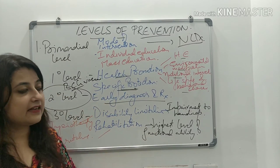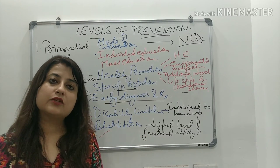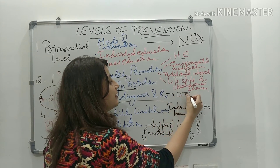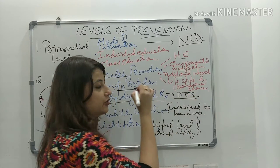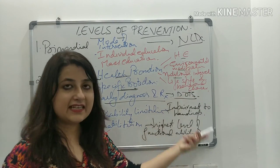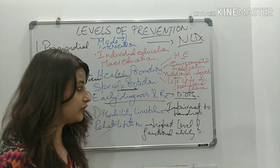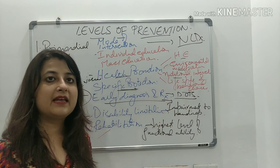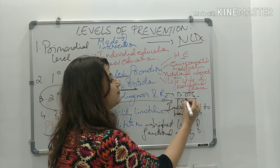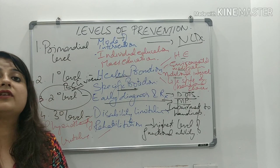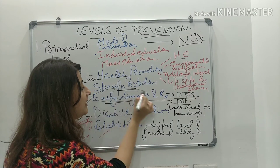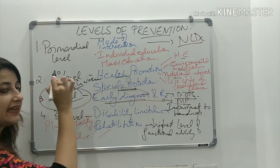In early diagnosis and treatment — which is secondary prevention — examples include giving DOTS therapy to a TB patient, where we are treating the TB patient, or preparing a blood smear for detection of malaria parasites, where we are trying to detect malaria. So these are examples of secondary level of prevention.